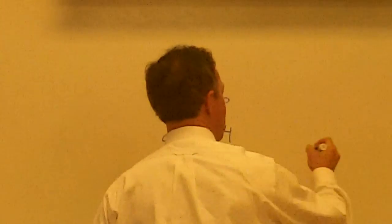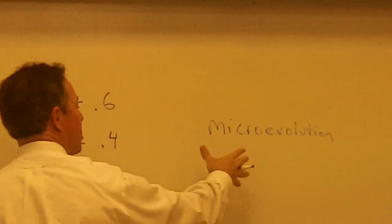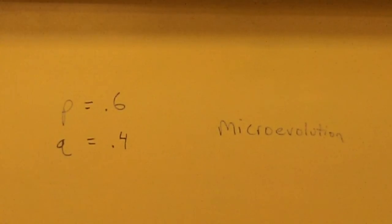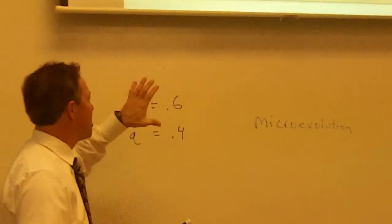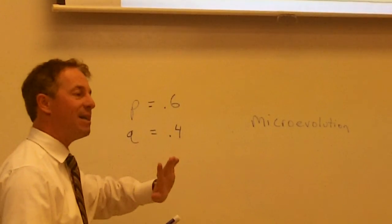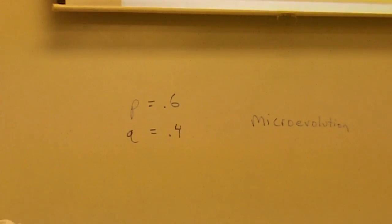We call that type of evolution microevolution. Microevolution is small changes in the gene frequencies. And it will happen for five reasons that they show in this table right here. Basically, Hardy-Weinberg said that in order for these numbers to stay the same, five conditions must be met. For these numbers to stay the same year after year, five conditions must be met.